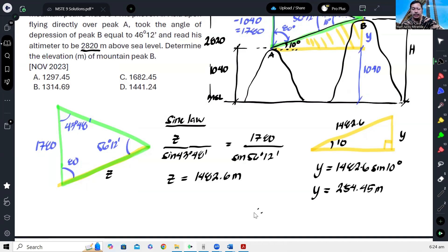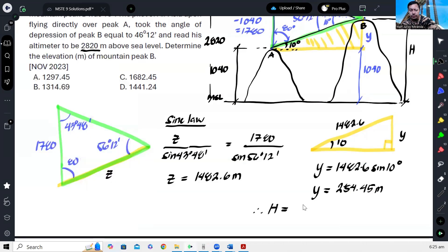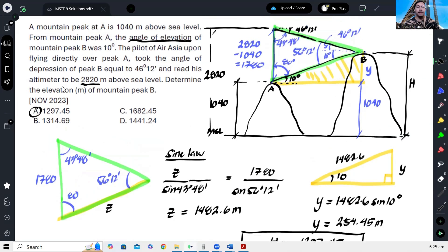So finally, the height would be equal to y plus 1,040, which is 257.45 plus 1,040, giving us 1,297.45. And that is the elevation of peak B. All right, and that's our answer, letter C. So that's how we solve this particular problem.